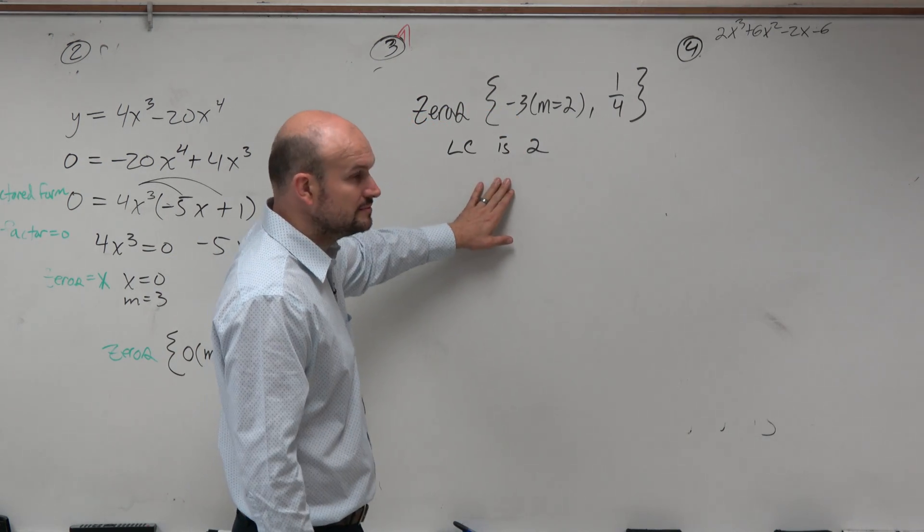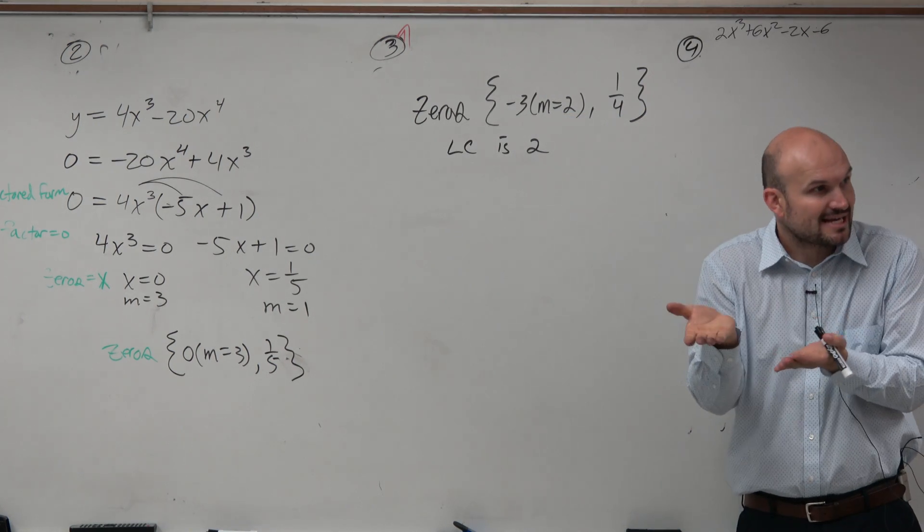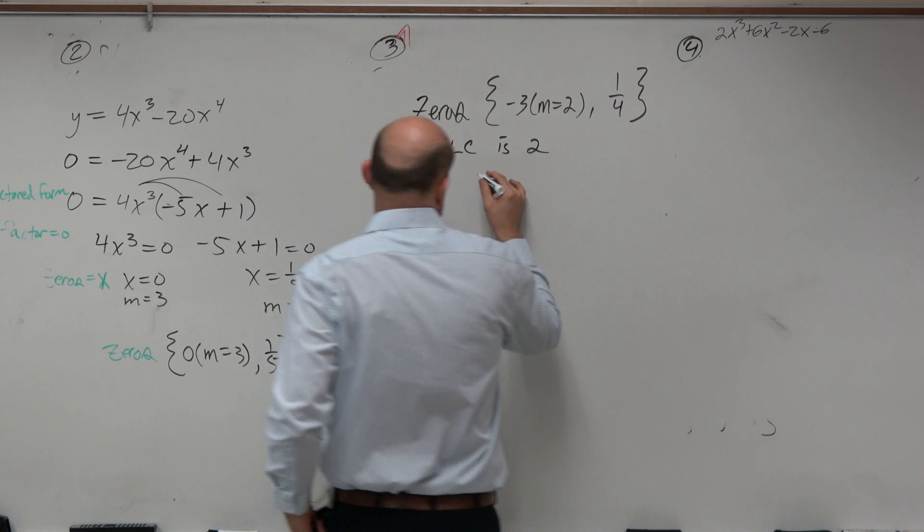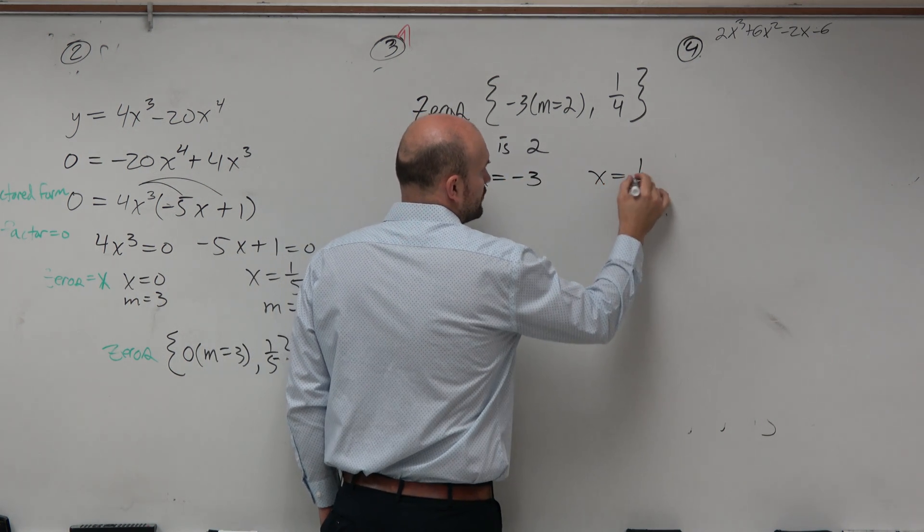So first thing we're going to do is we have the zeros. Let's set all the zeros equal to x, because that's how we wrote them in that set notation. So we can say x is equal to negative 3, and x is equal to 1/4.